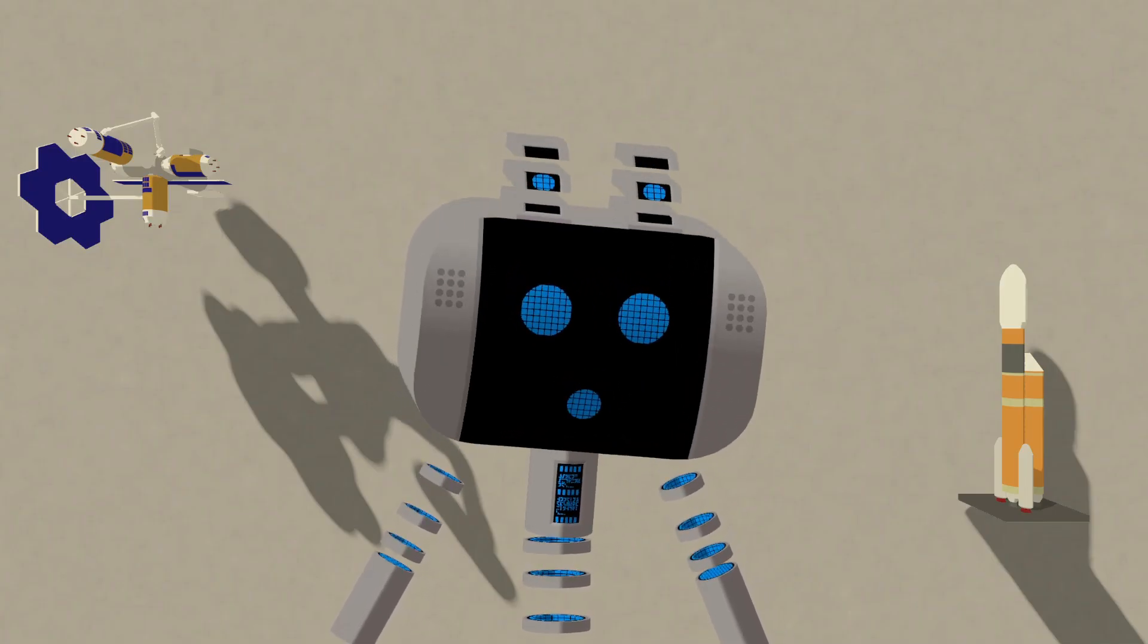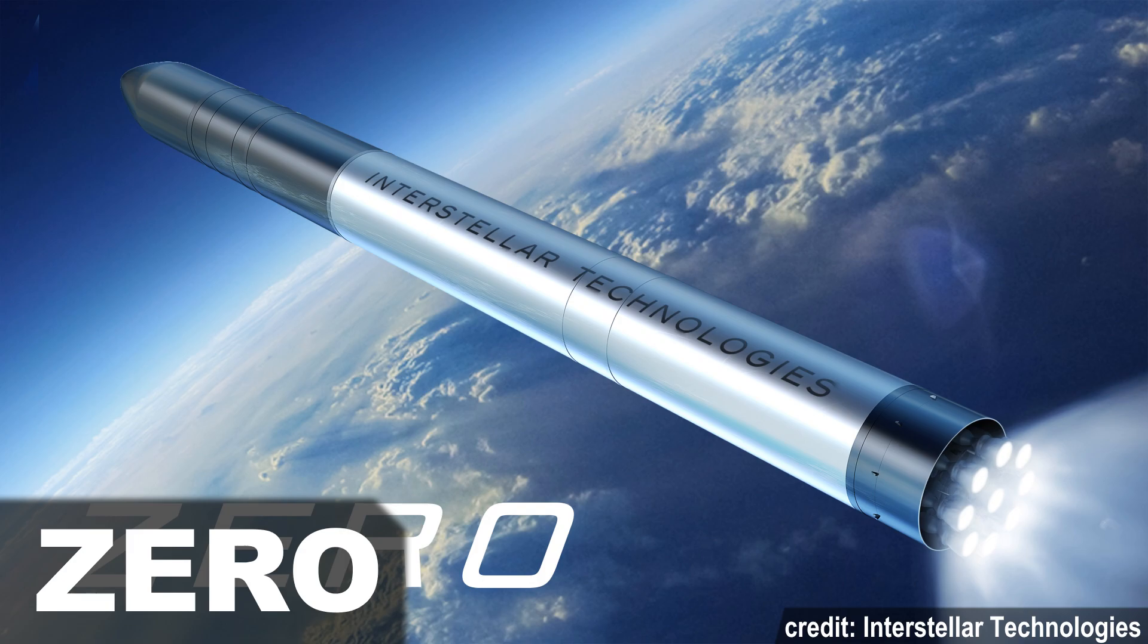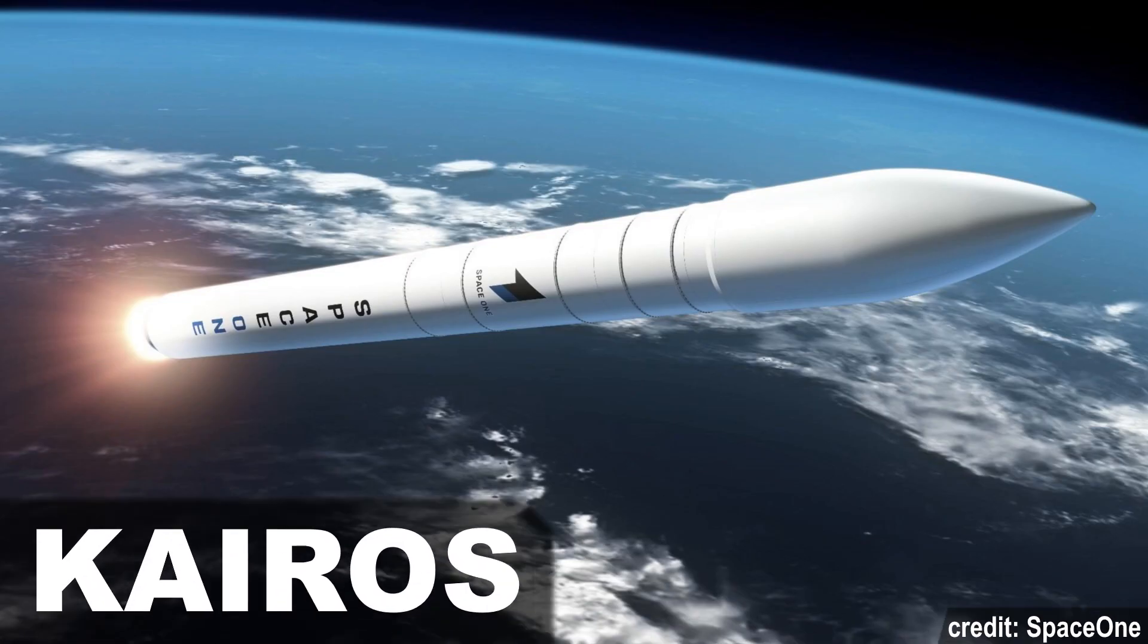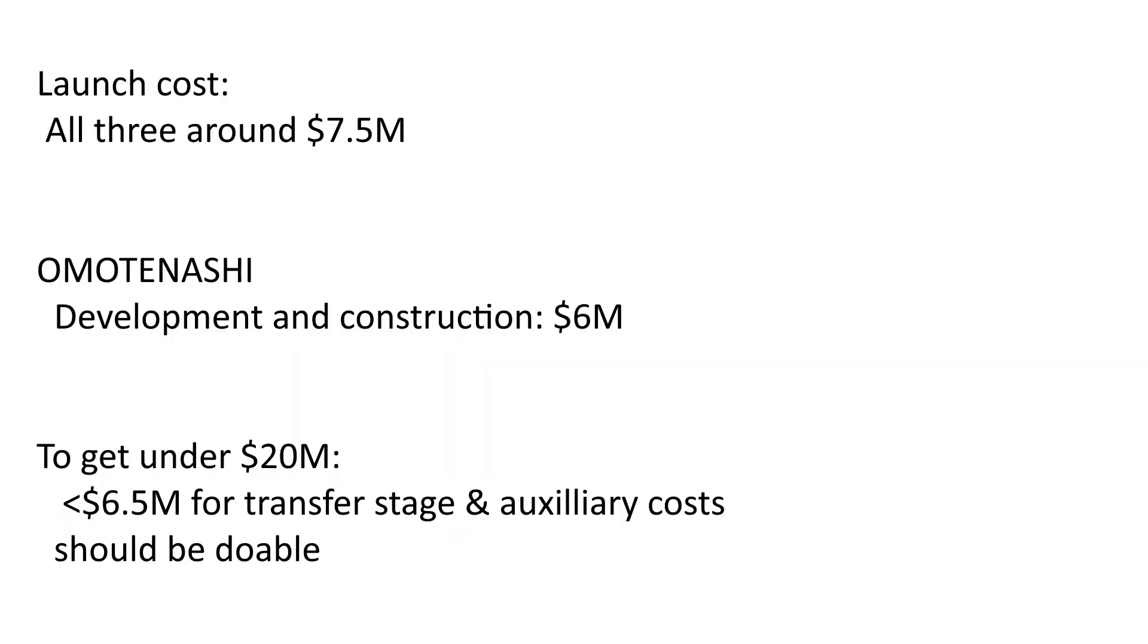It may also be launched on smaller rockets, which is a lot cheaper. I did the maths and OMOTENASHI could have been launched on a small satellite launcher, like Interstellar Technologies' Zero, Space One's Kairos, or Rocket Lab's Electron rocket, with room to spare for a total of less than 20 million dollars.